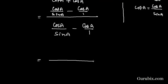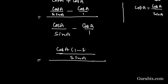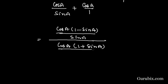Now we shall take the LCM in the numerator. Taking cos a common, we have cos a times (1 minus sin a) over sin a in the numerator, and cos a times (1 plus sin a) over sin a in the denominator. We can then cancel cos a and sin a from both numerator and denominator.